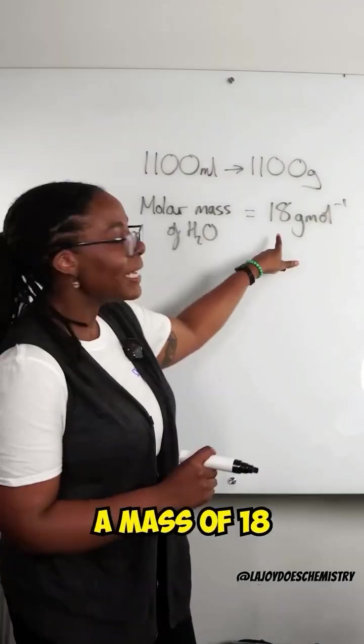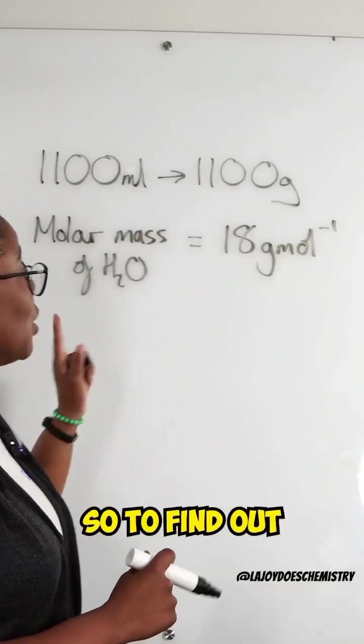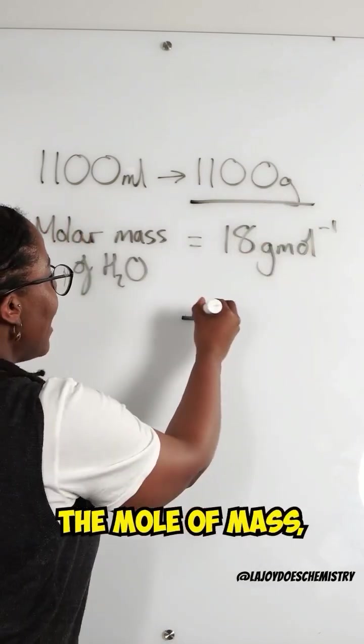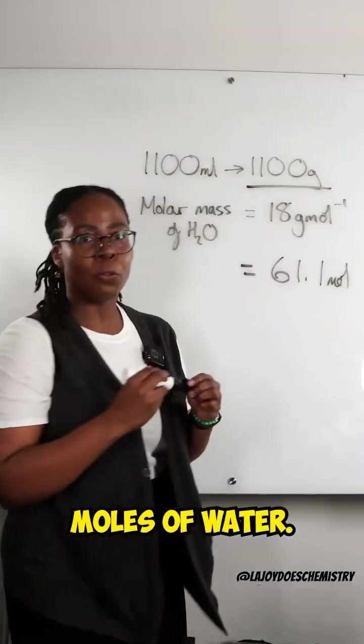Water has a molar mass of 18 grams per mole. So that means each mole of water weighs 18 grams. So to find out how many moles, we do the mass divided by the molar mass, and that gives us 61.1 moles of water.